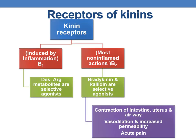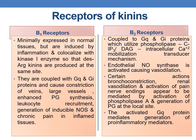Coming to the receptors of kinins: the receptors are of two types — B1 and B2. B1 is mostly induced by inflammation, whereas B2 performs most non-inflamed actions. The desarginine metabolites are selective agonists for B1, whereas bradykinin and calidin are selective agonists for B2. They mediate principal actions such as contraction of the intestine, uterus and airway, vasodilation and increased permeability, and are also associated with acute pain.